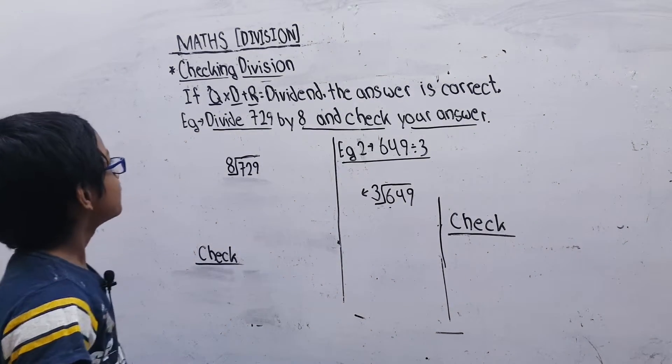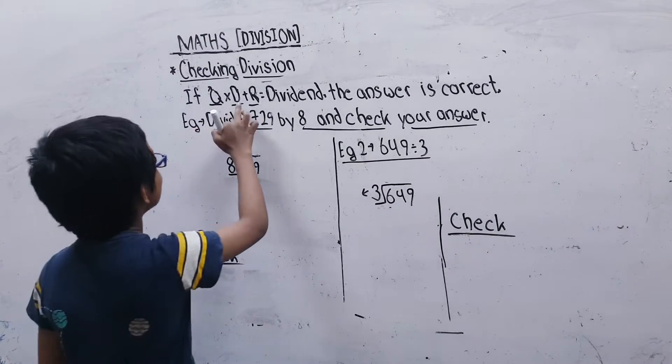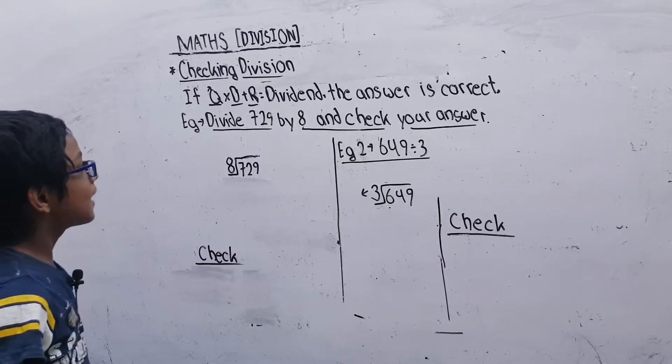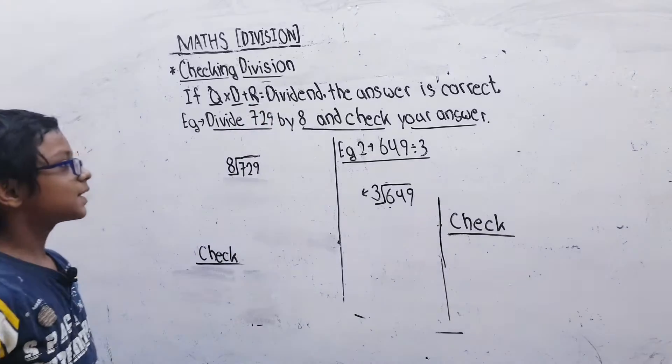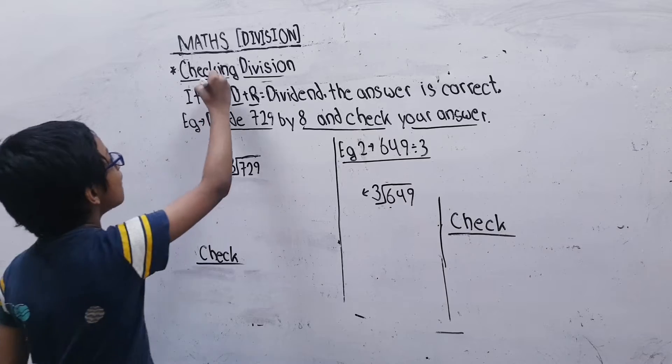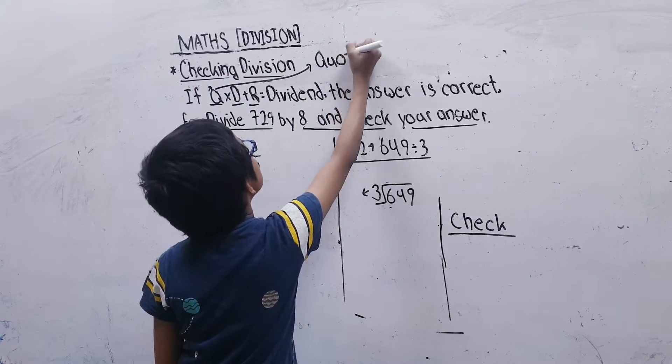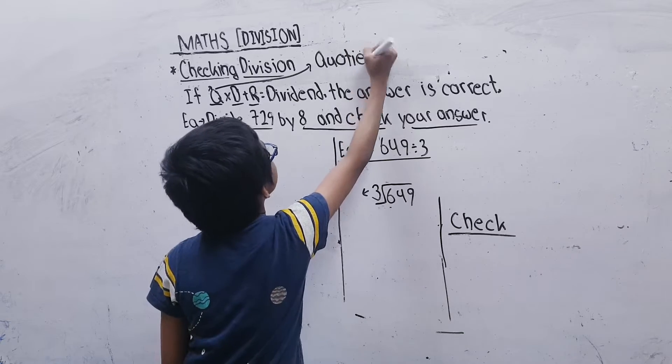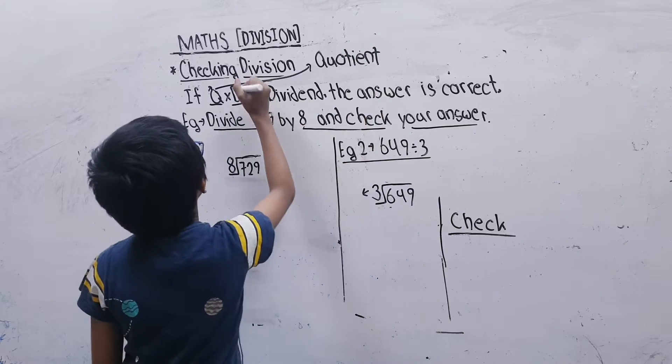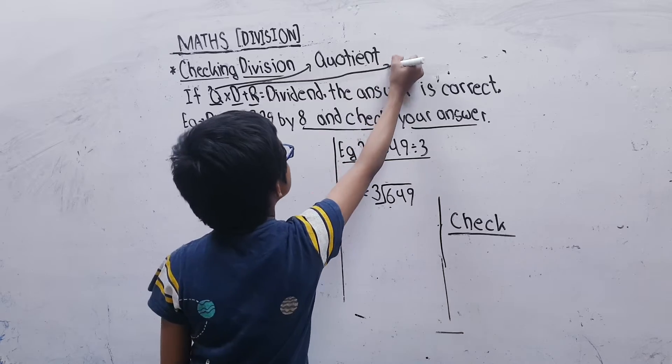If Q multiply by D plus R equals dividend, then the answer will be correct. In this, Q means quotient - quotient is the answer we get on dividing, and D is divisor.